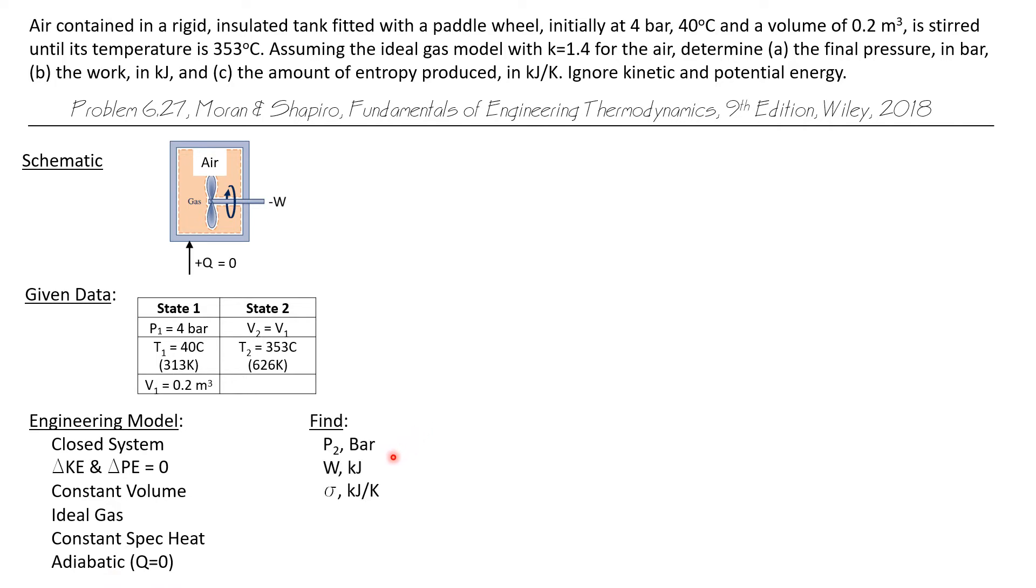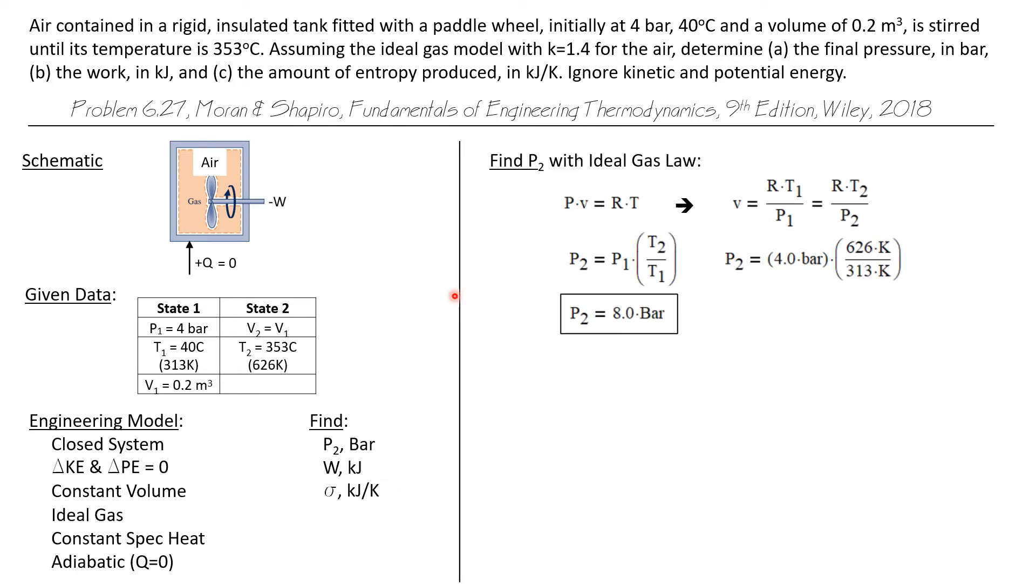We want to find the final pressure, the work done during the process, and the entropy produced during the process. Let's begin by finding the final pressure, which we can do with the ideal gas law. We can write the gas law as PV equals RT. But the specific volume is a constant. The volume is a constant and it's a closed system. So the mass is constant.